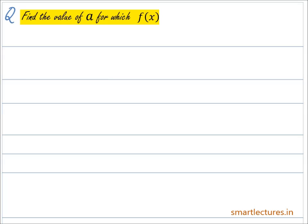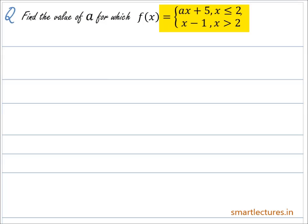Now let's solve one more question on testing the continuity of a function. Find the values of a so that the function f given by f(x) = ax + 5 where x is less than or equal to 2, and f(x) = x - 1 where x is greater than 2, is continuous at x = 2.